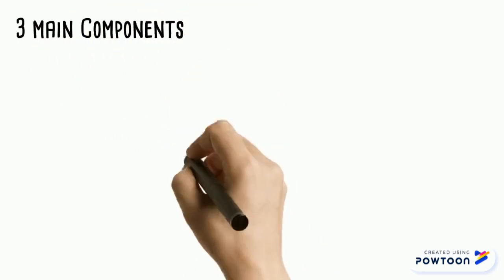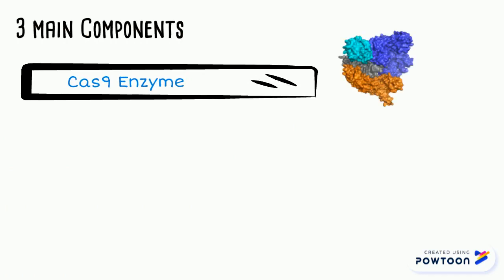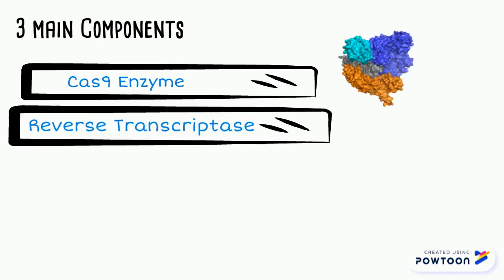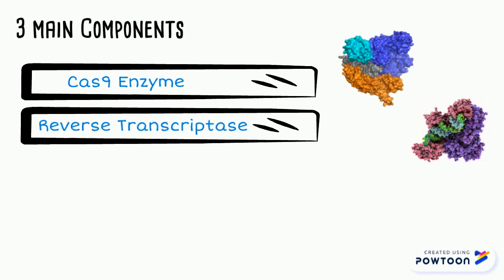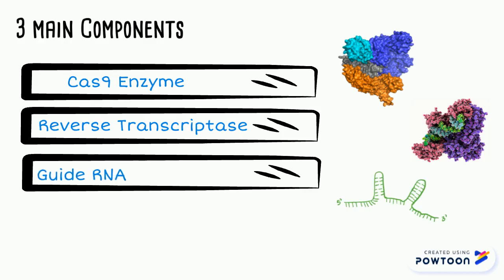In prime editing, we have three main components. First, there's the Cas9 enzyme, which we saw in CRISPR. There's the reverse transcriptase enzyme, and we also have a guide RNA. Now we will explain the role of each one in further detail.